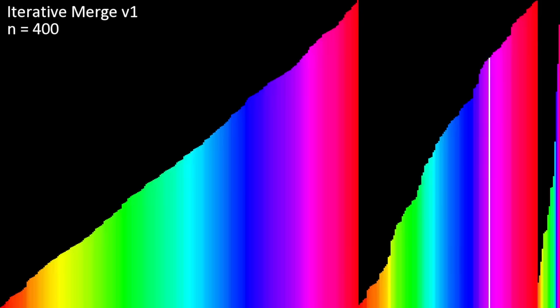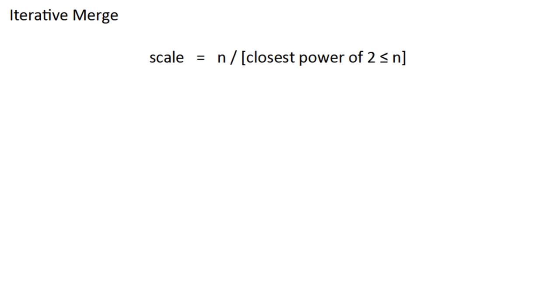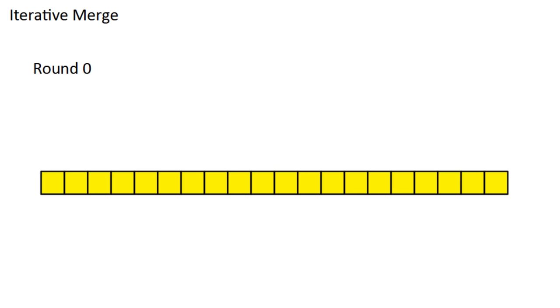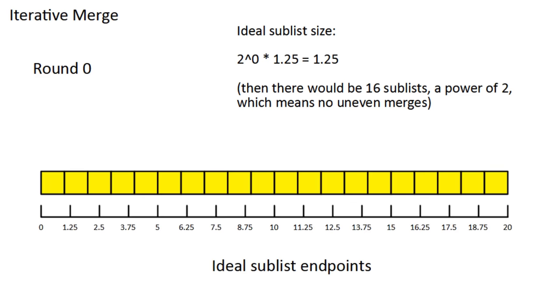If n isn't a power of 2, you might encounter uneven merges. We can fix this by first defining a variable called scale, equal to n divided by the closest power of 2 less than or equal to n. For example, n equals 20 would have scale 1.25. Now, on round k, sublists of size 2 to the k times scale would be ideal to avoid uneven merges. But that probably won't be an integer, so instead, we take multiples of that, and then round each one down, and these tell you where each sublist starts.